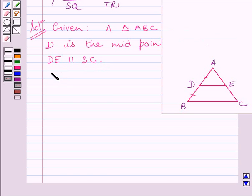We have to prove that DE bisects AC. We can say, we have to prove that AE is equal to EC. Let us start with the proof now.